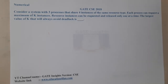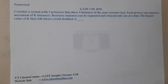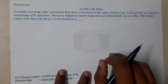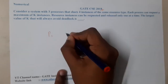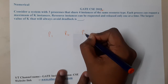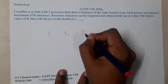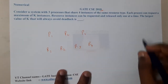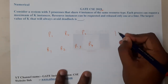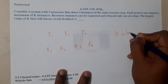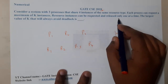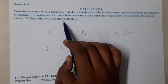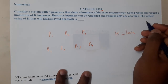Hello guys, we are back with our next lecture. This question belongs to GATE CSE 2018. Consider a system with three processes P1, P2, P3 that shares four instances of the same resource type: R1, R2, R3, and R4. Each process can request a maximum of k resources. Resources can be requested and released only one at a time. The largest value of k that will always avoid a deadlock is?